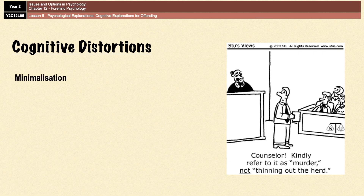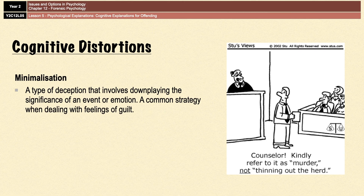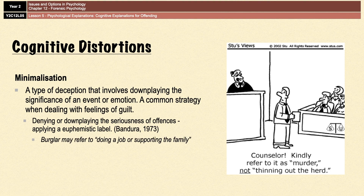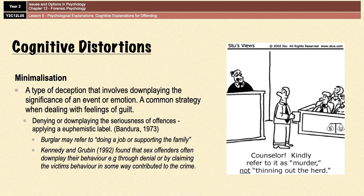Minimalization, on the other hand, is a cognitive distortion where the significance of an event is under-exaggerated — for example, by downplaying the seriousness of the offense or by applying a euphemistic label such as 'carrying on the family business,' 'doing a job,' or 'thinning out the herd,' which is obviously a very extreme example. Using minimalization helps an individual accept the consequences of their behavior and means that negative emotions can be reduced. Sex offenders in particular will often use minimalization by downplaying their behavior through denial or by claiming that the victim's behavior contributed to the crime, as shown in research by Kennedy and Grubin from 1992.